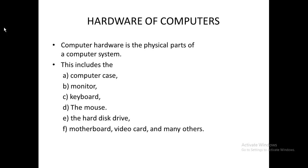We are now going to the hardware of the computer. We are talking about the physical components of computers. The physical components of computers include the computer case — this is the casing, the outside vessel of the computer. We also have the monitor, also called the VDU. This is where you see all what you are doing and the output of what you have done.